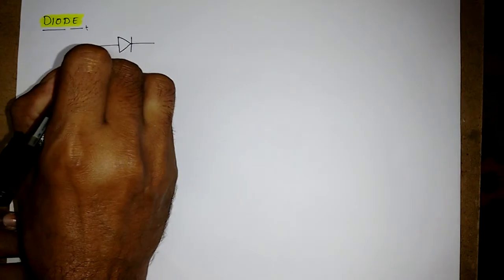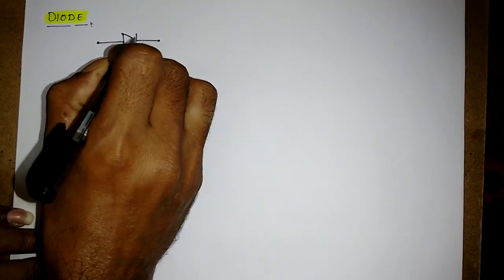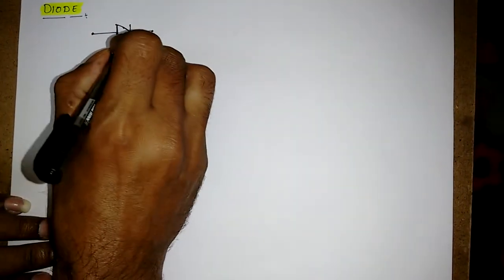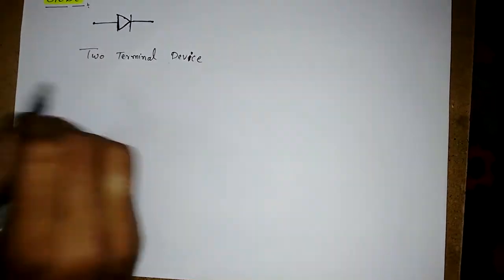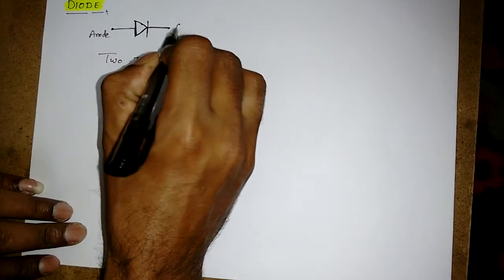We will study the diode concepts. We'll start with the symbol — what is inside this diode, how to manufacture it. Just remember there is some element with some operations. A diode is a two-terminal device. The name 'diode' comes from it having two terminals: one is the anode and the other is the cathode. That's why it is called a diode.